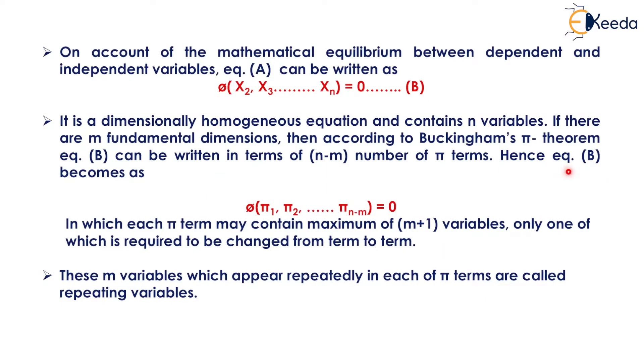Hence equation B becomes φ(π₁, π₂ up to π n minus m) equals 0, in which each π term may contain maximum of m plus 1 variables, only one of which is required to be changed from term to term.